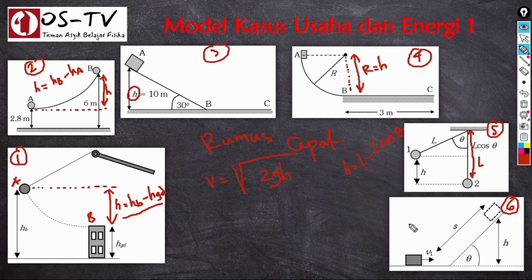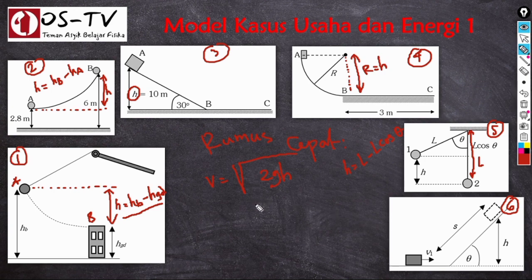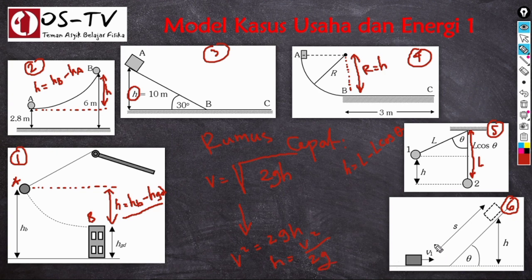Untuk kasus nomor 6, benda dengan kecepatan V1 meluncur ke atas bidang miring yang licin, mencapai ketinggian H, dan kemudian diam. Kita bisa memformulasikan ulang rumus dengan mengkuadratkan kedua ruas: V² = 2GH, sehingga H dapat ditentukan sebagai V² dibagi dengan 2G. Jika di dalam soal diketahui V1, maka kita tinggal memasukkan nilai V1.